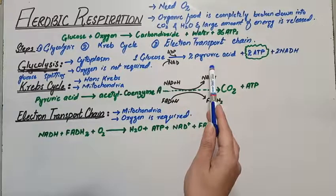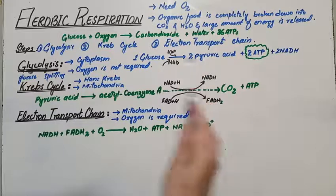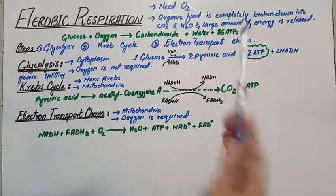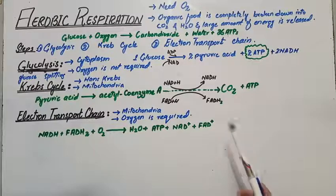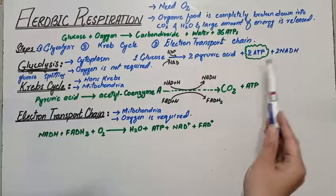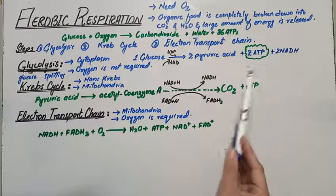Since oxygen is not required, glycolysis occurs in both aerobic and anaerobic respiration. If you want to study more about glycolysis, you can check out my previous video on anaerobic respiration. With the gain of two pyruvic acid, two ATP molecules, and two NADH, the glycolysis step is completed.